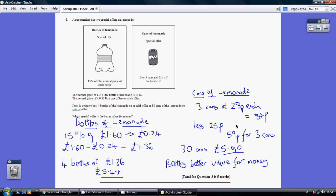Ten lots of 59p is £5.90. We're comparing £5.44 for the bottles and £5.90 for the cans, and we can see that the bottles are cheaper. Therefore, bottles give us better value for money.